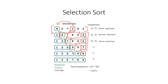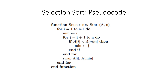We then find the minimum element 8 in the remaining range and swap 8 with 9, so 9 goes to the end and 8 goes to the correct place. In the end we have a sorted array. If we count all comparisons during selection sort we get a total that gives a time complexity of O(n²).